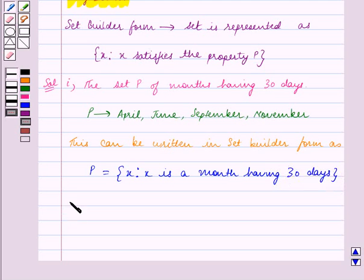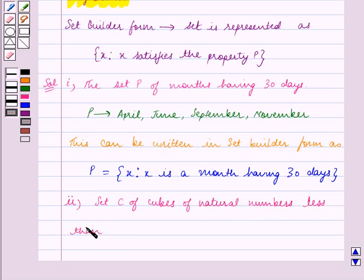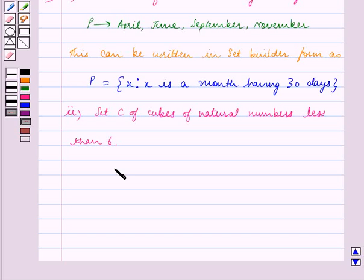Let us see the second part now, which is set C of cubes of natural numbers less than 6. The cubes are 1, 8, 27, 64, and 125.